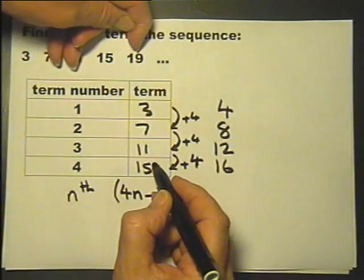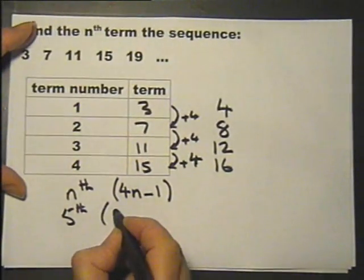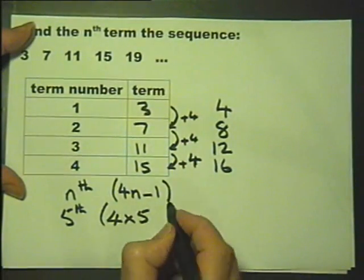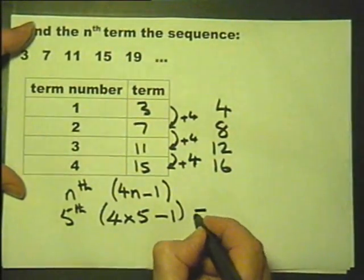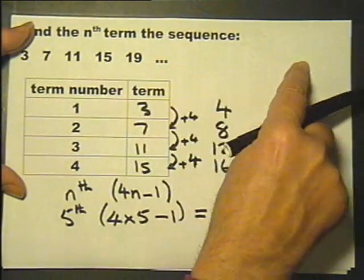Let's test it with this 5th value. The 5th value is going to be 4 times 5 subtract 1. 20 subtract 1 is 19. It works. So now I can work out any term.